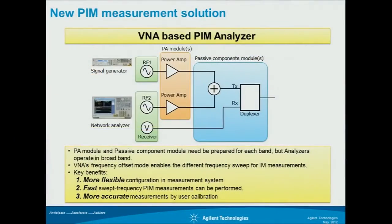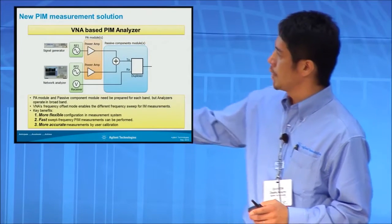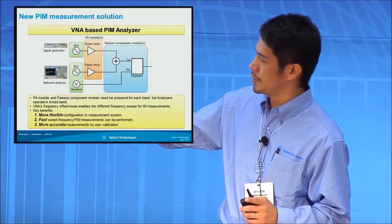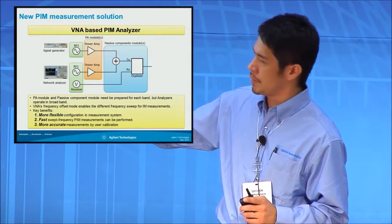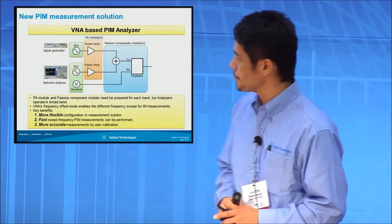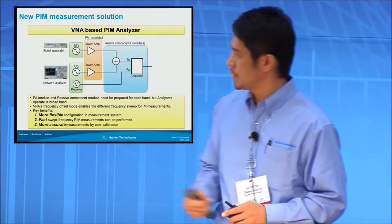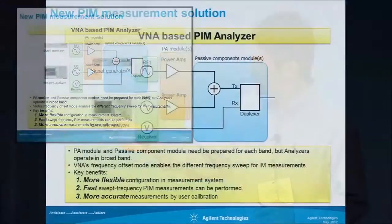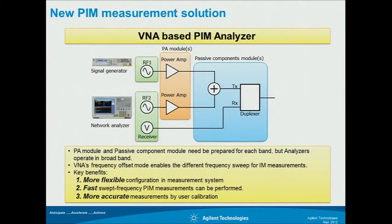Here is our new proposal using a network analyzer. We use the signal generator and receiver of the network analyzer, and the other parts are the same as the previous slide. Because the network analyzer has a frequency offset feature — meaning we can have two different frequencies for source and receiver — we can have three different frequencies to measure PIM. The key benefits of this solution are: flexible configuration, faster measurement speed, and more accurate measurement.